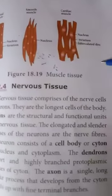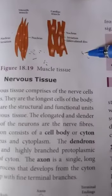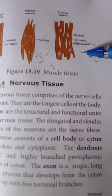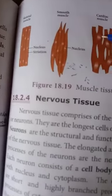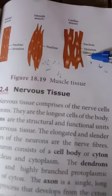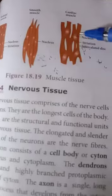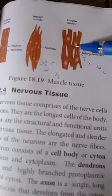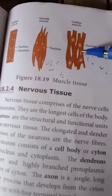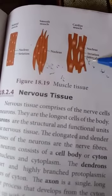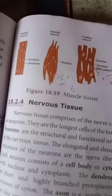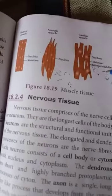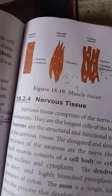Next, we see cardiac muscle. It is a special contractile tissue present only in the heart. The muscle fibers are cylindrical, branched, and uninucleated. The branches join to form a network called the intercalated disc, which is a very unique feature of cardiac muscles.